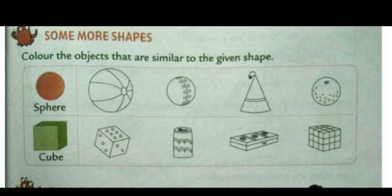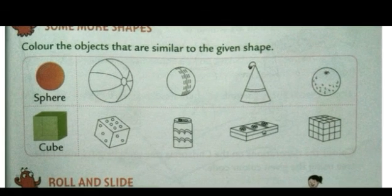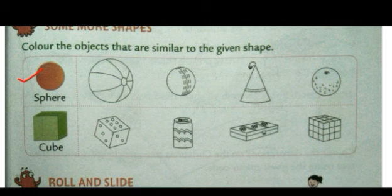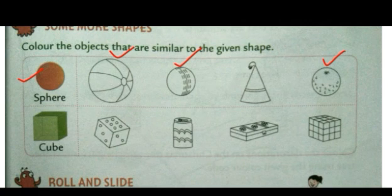See the first exercise given here: Color the objects that are similar to the given shape. We need to color the objects that are similar to the shapes given to us. The first shape is of a sphere. First we will put a tick on the objects which are similar to it — like the ball. These all are similar to the given shape. Now we need to color them. I will use red color to color it.